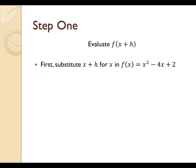So for step 1, the first thing we need to do is substitute x plus h for x in f of x. When we do that, we'll get the result of f of x plus h equals x plus h squared minus 4 times x plus h plus 2.